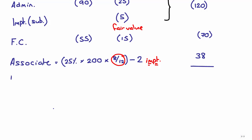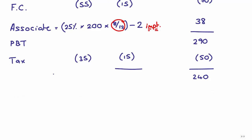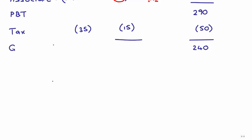You can now put in profit before tax, which is 290. Your tax line is 35 and 15, which gives me 50, totaling up to 240 as my group profit for the year. If I total up S's profit, that gives me 50.